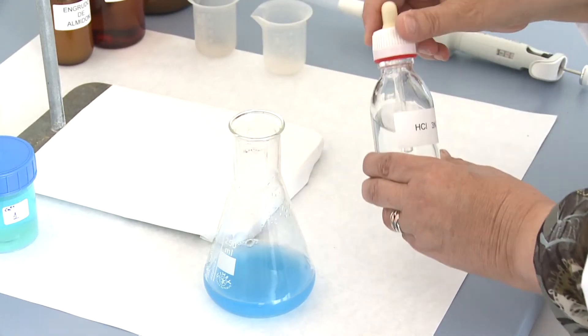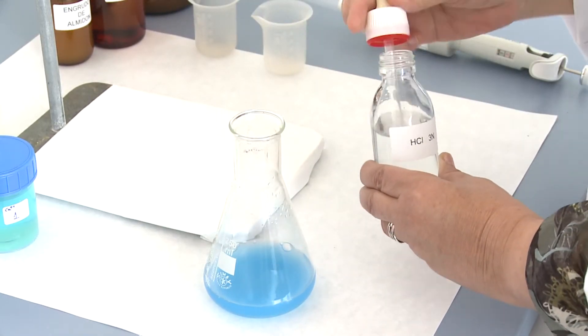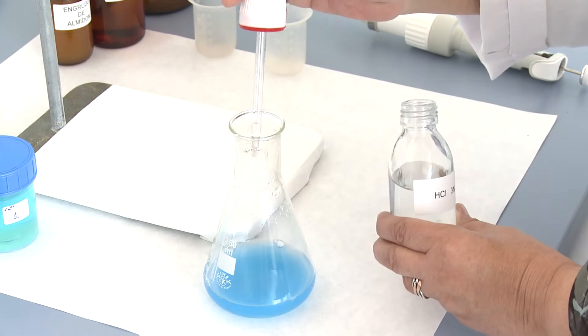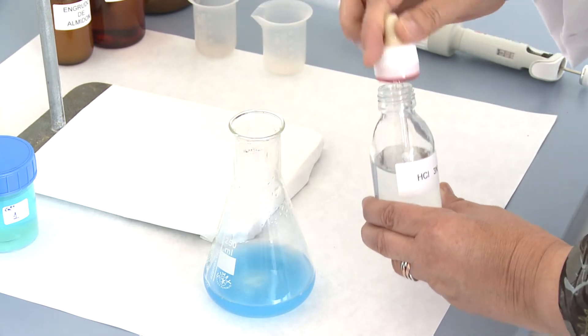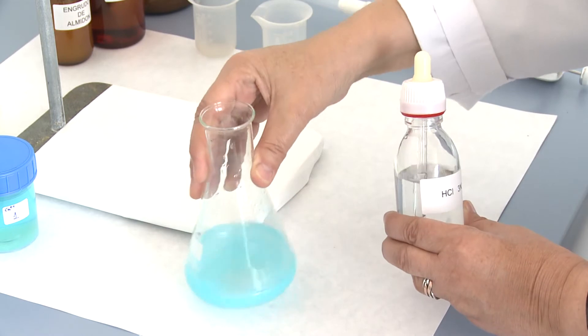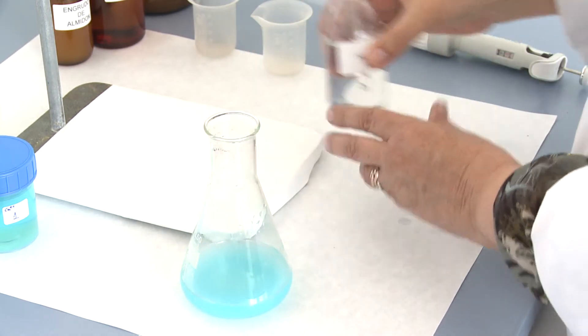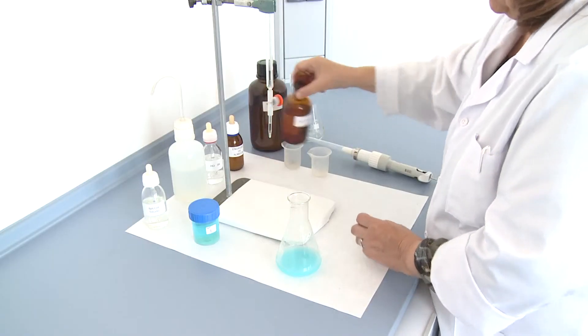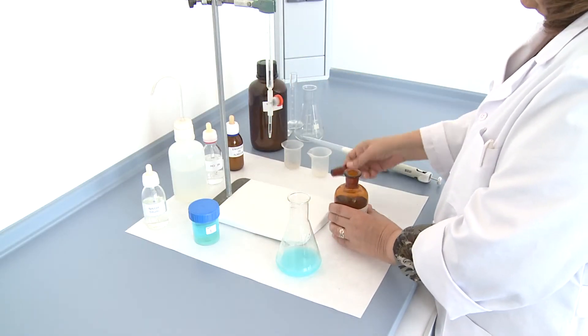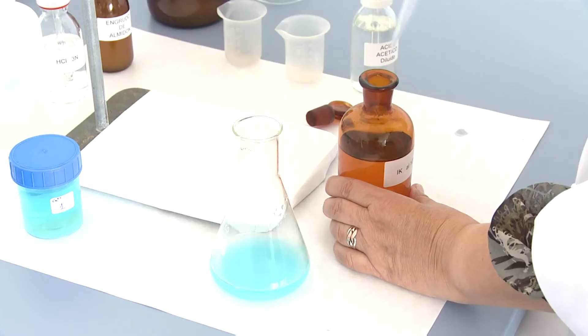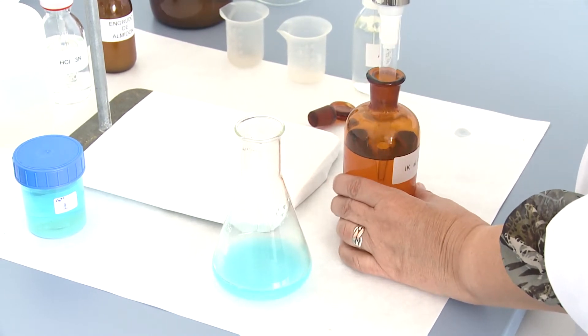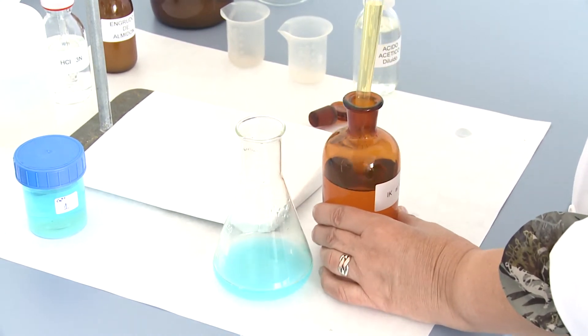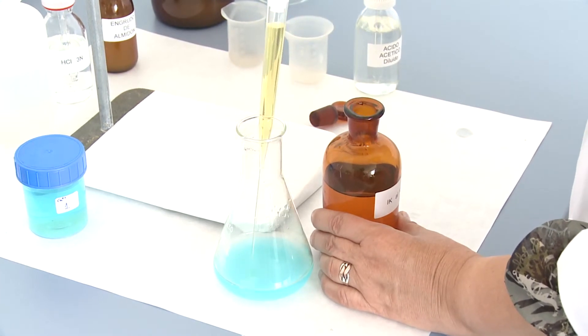Then we add a few drops of hydrochloric acid and 20ml of potassium iodide until a greenish color appears, and also add 5ml of glacial acetic acid.